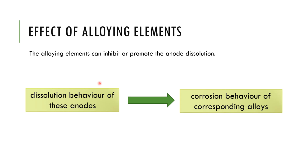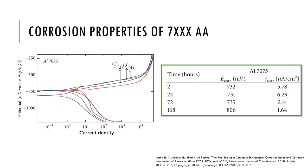This dissolution behavior is related to the corrosion behavior of the corresponding alloy. The corrosion properties of the 7000 series alloys can be calculated using Tafel plots, as given in these pictures. We can see that there is a variation in the corrosion potential with respect to the times of immersion.